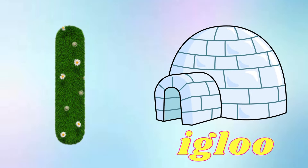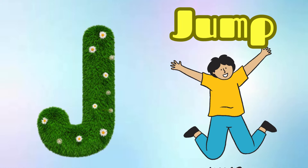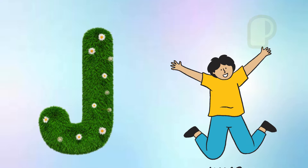I is for Igloo, I-I-Igloo. J is for Jump, J-J-Jump.